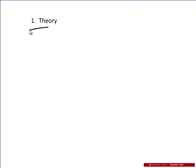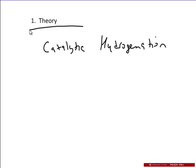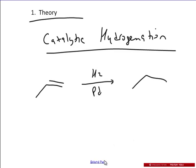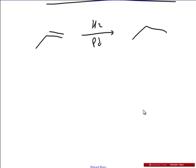So the first thing I want to talk about is the theory. Catalytic hydrogenation is really just an idea of what we already talked about where you have an alkene, you treat it with H2 and palladium, and you get an alkane. Now the reason why you need palladium — and by the way, it could be palladium, it could be platinum, it could be nickel — they all do the same thing. These are all surfaces in which the H2 is going to be attached to.